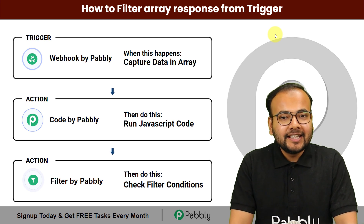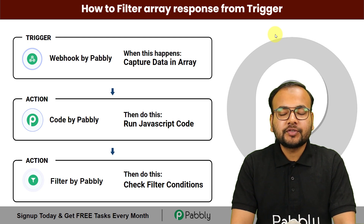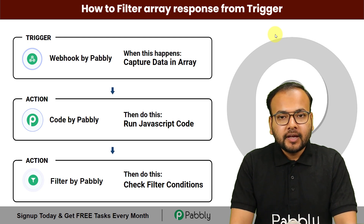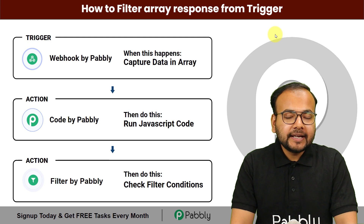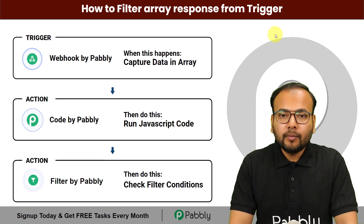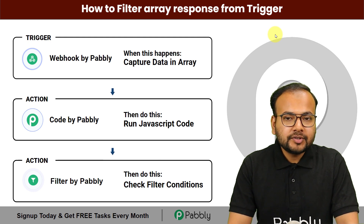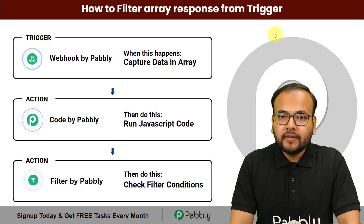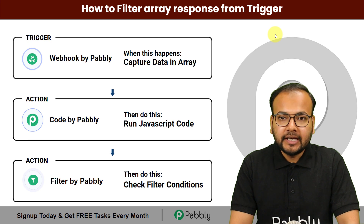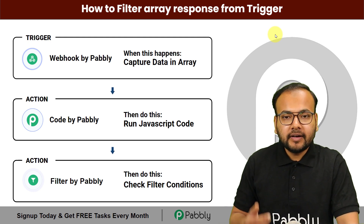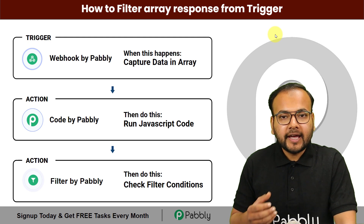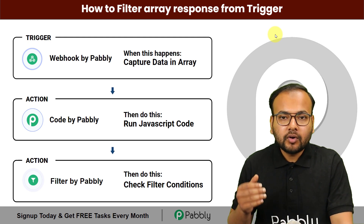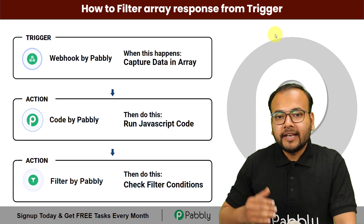Welcome to PavliConnect. This tutorial is on how to filter array responses from a trigger. Whenever you connect any application in a trigger, it's common to receive the response in an array of data format. But that array may not always be in the same format that we need, so it is necessary to manipulate the array you receive to extract the information you want to pass on to any other application.